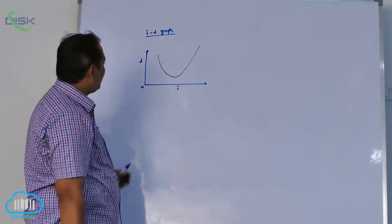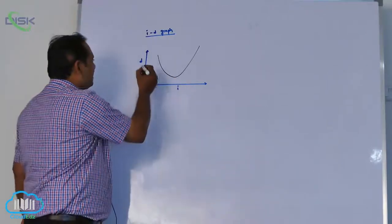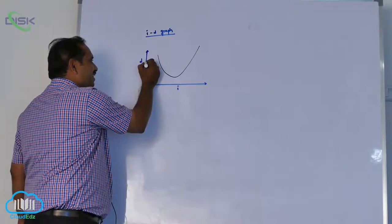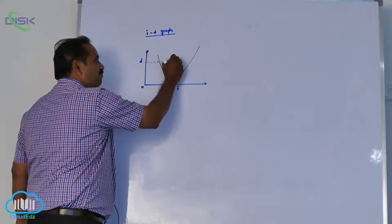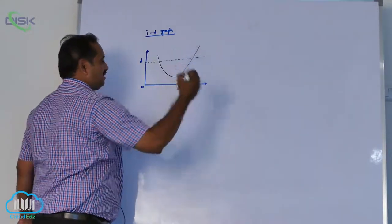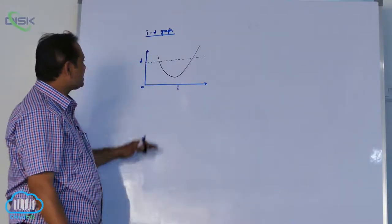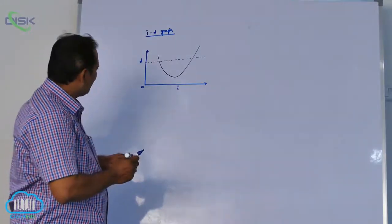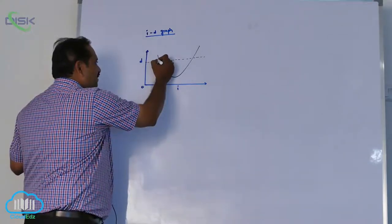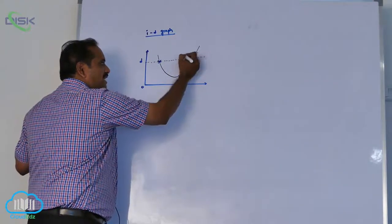So from your coordinate geometry, you can understand very clearly this one. Draw a horizontal line parallel to the x-axis, known as angle of incidence. What is the meaning of this line? Two intercepts I am going to get here.